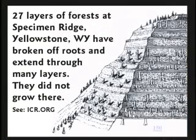Here's the specimen ridge at Yellowstone National Park — 27 consecutive layers. They don't have any roots, or maybe little root stubs, but no complete root systems. Oftentimes they extend up into layers above. You could go through and find that layers 1, 2, and 3 are connected by one tree; layers 3, 4, and 5 by another; layers 4, 5, and 6 by another. By putting the pieces together, you could prove easily that all of these layers formed at the same time.